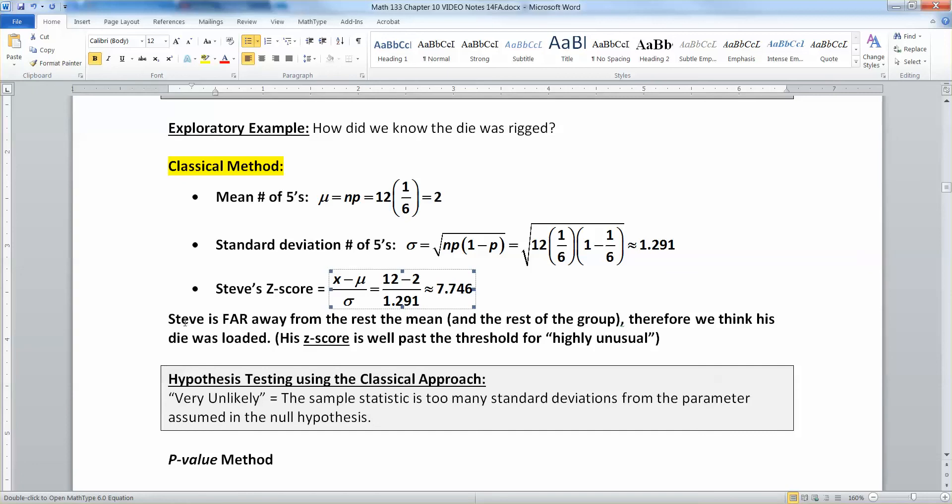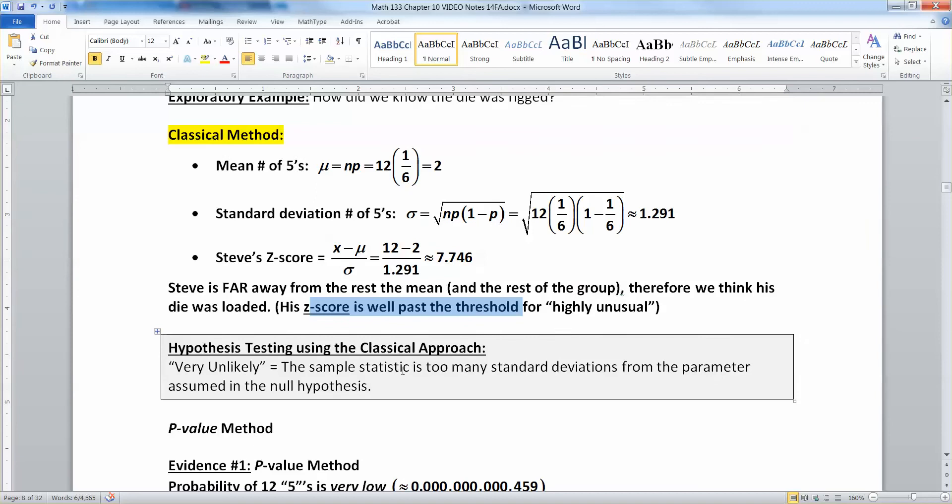So we know that Steve is far away from the rest of the group and the mean. Therefore, we think that the die is loaded. In other words, his Z-score is well past the threshold for highly unusual.